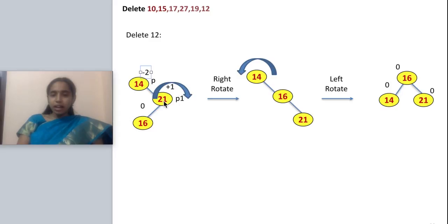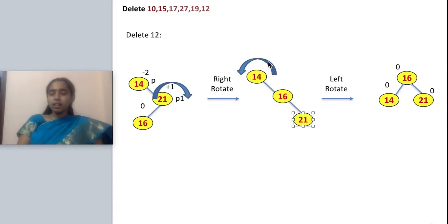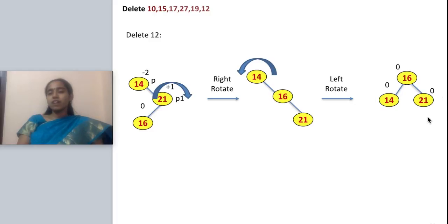For right-left, I make a right rotation at P1 followed by a left rotation at P. I make a right rotate at 21: 21 goes down and 16 moves up, giving 14, 16, 21. Then I make a left rotate at 14: 14 becomes the left child of 16. The tree becomes: 16, with 14 and 21 as children. The balance factor is checked — the tree is completely balanced.